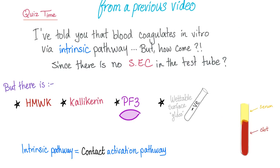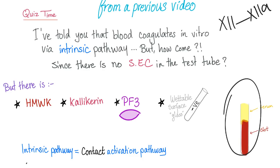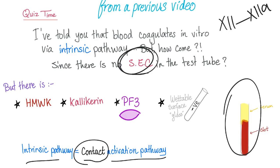Let me answer the question from the previous video. Blood coagulates in vitro via the intrinsic pathway. But how can it coagulate using the intrinsic pathway when there is no subendothelial collagen in the test tube? It's true that there is no subendothelial collagen in the test tube; however, we still have high molecular weight kininogen, plasma kallikrein, platelet factor 3, and the wettable surface of the glass, which has a negative charge. All of these can activate factor 12 into 12a and start the intrinsic pathway. That's why we call the intrinsic pathway the contact activation pathway — it contacts subendothelial collagen in vivo, or the wettable glass surface in vitro.